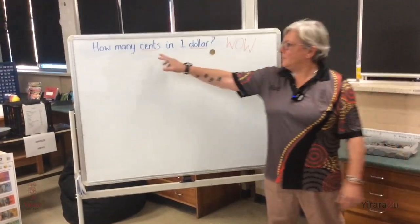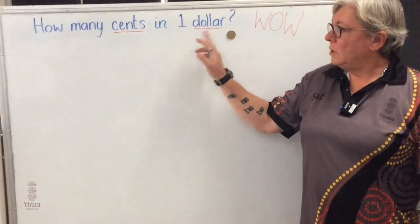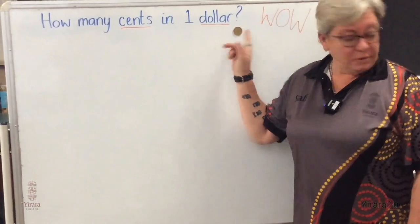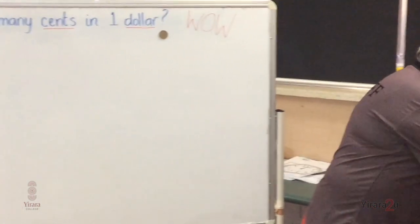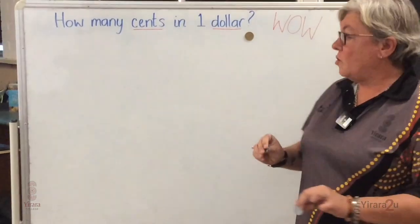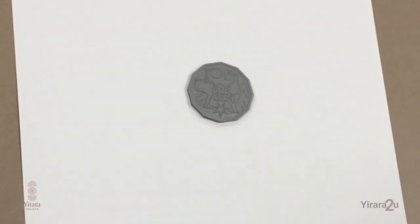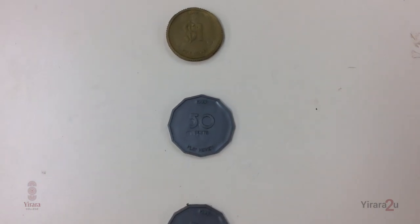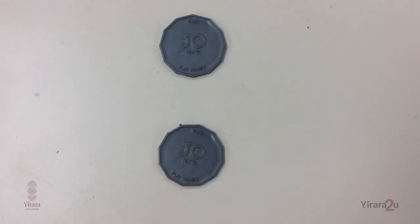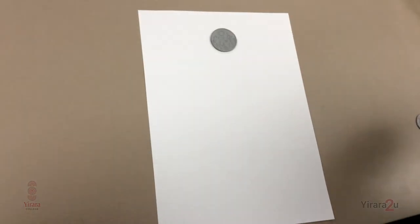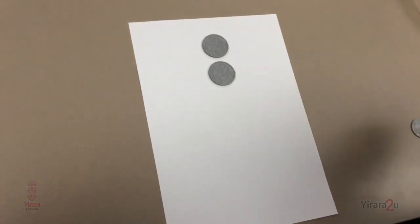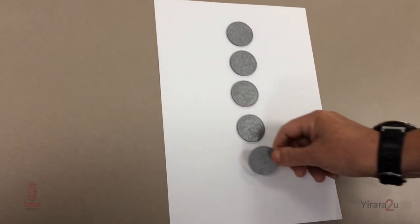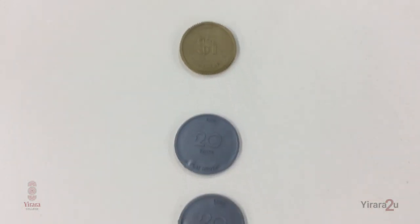Two of our words of the week this week are cents and dollars. How many cents are there in one dollar? One hundred. We can make a dollar in many different ways using our coins. For example, we could use two 50-cent coins. 50 plus 50 equals a dollar.